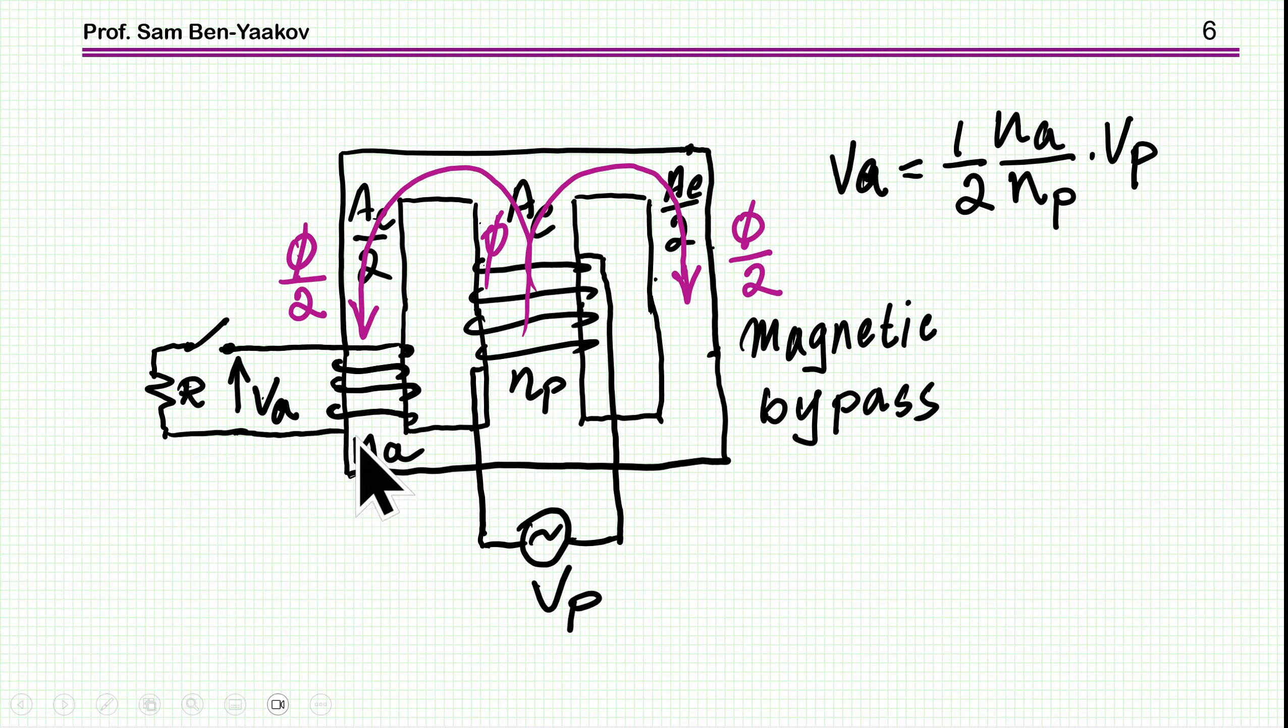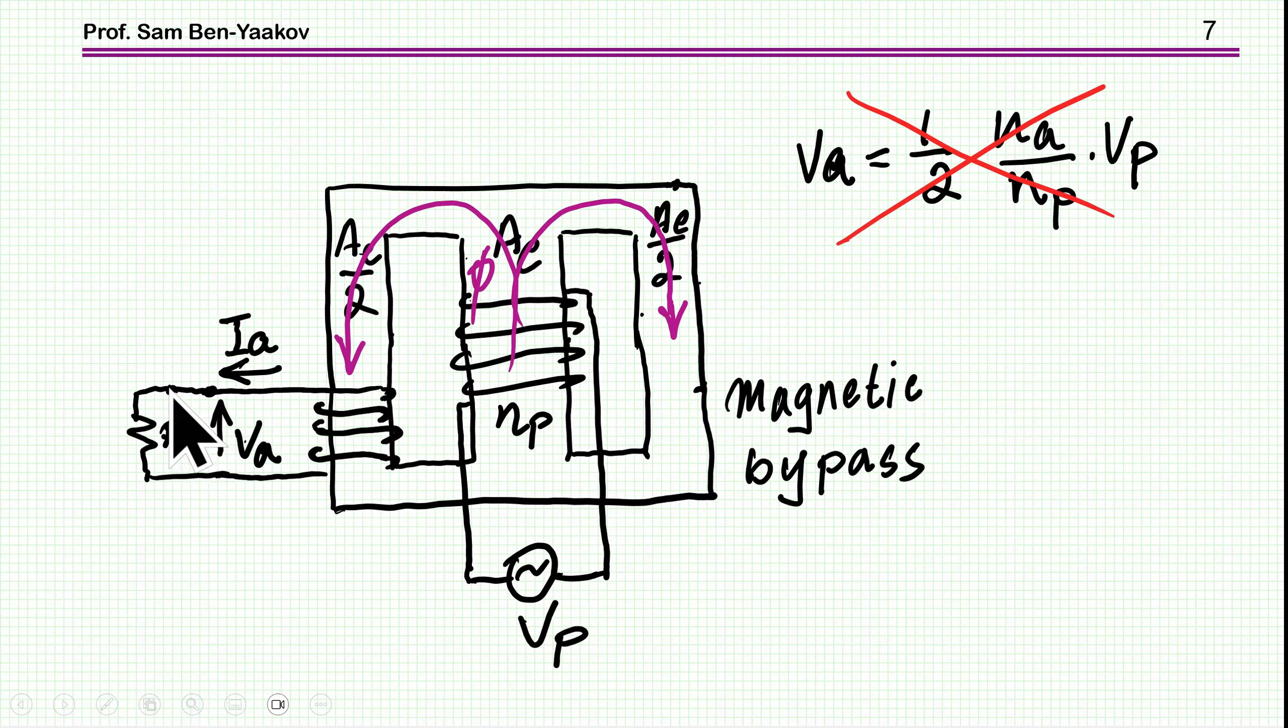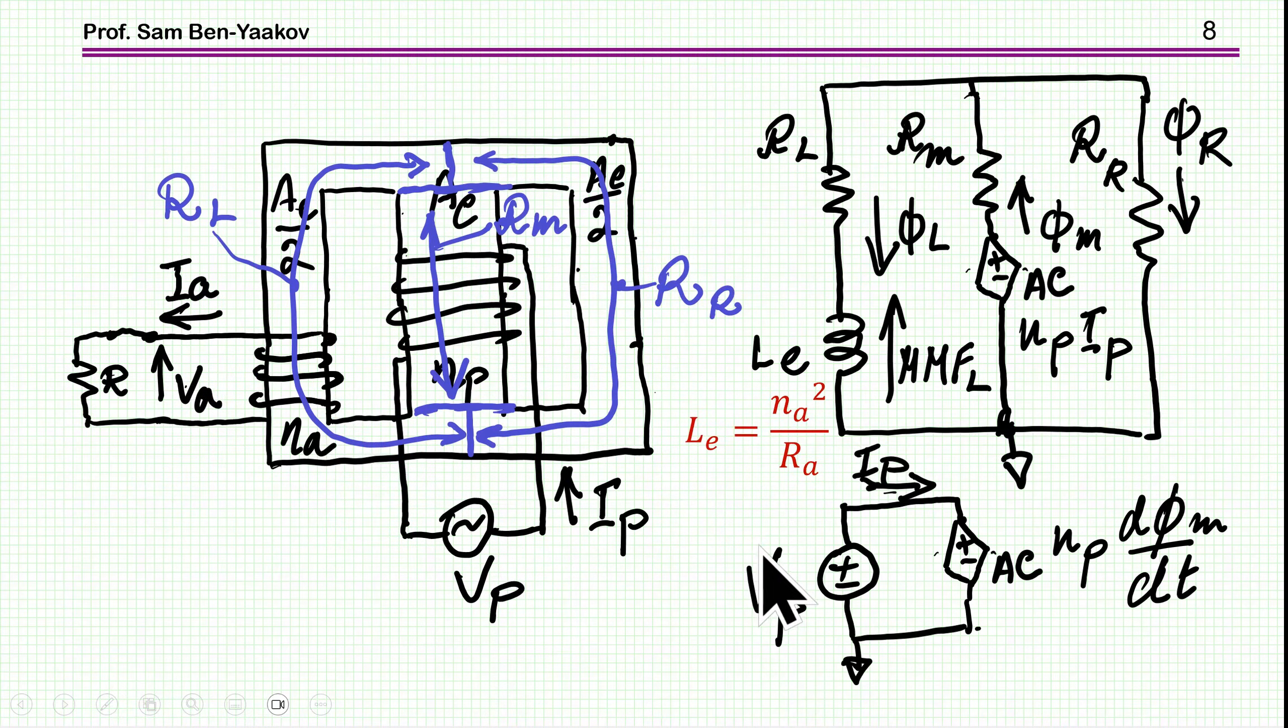Now, what happens if the switch is turned on, that is closed, and we have here now current passing? So as it turns out, this equation is incorrect in this particular case. And the reason is that the flux now is not split into two halves. In fact, the flux that will be passing through this leg here with this short is much, much smaller than the flux here. And we are going to examine it by the equivalent circuit, by the reluctance-based equivalent circuit.